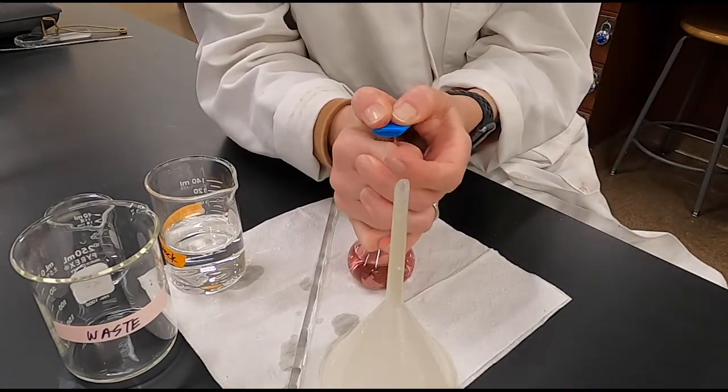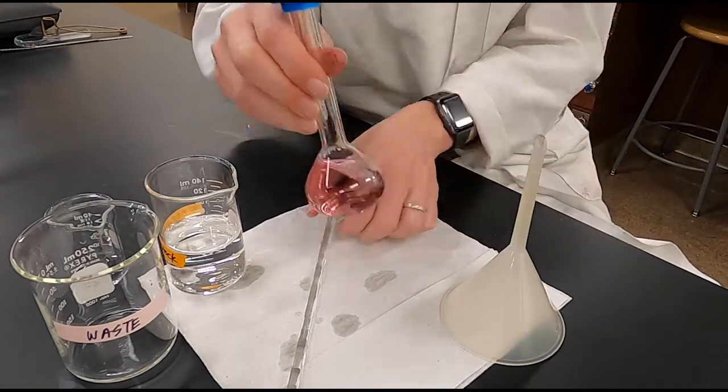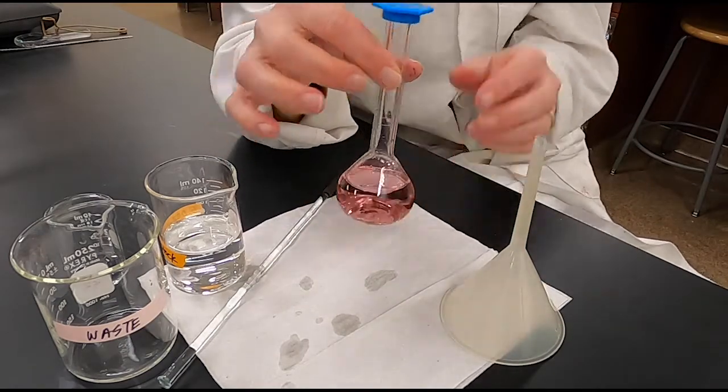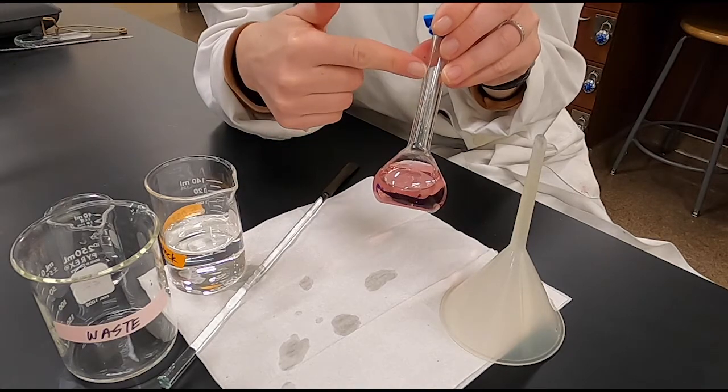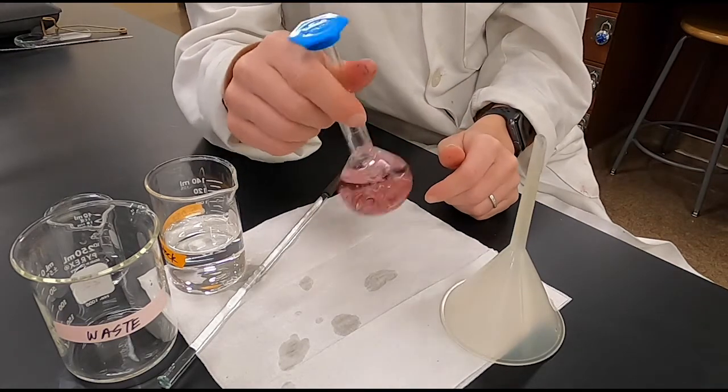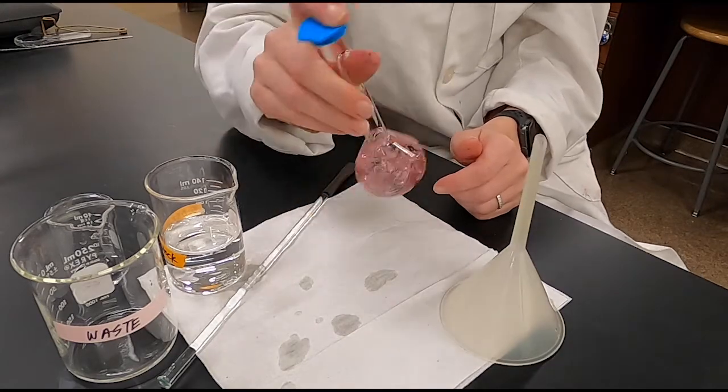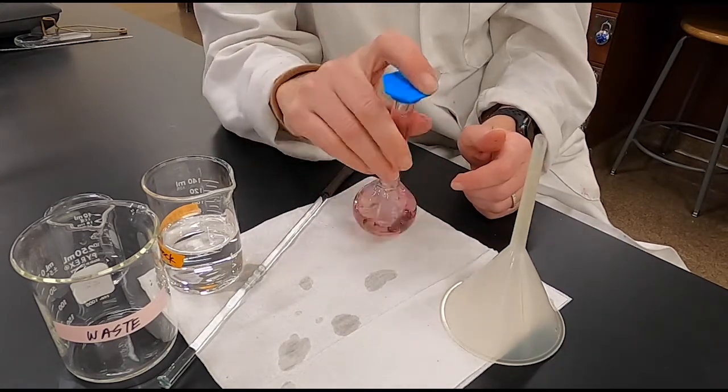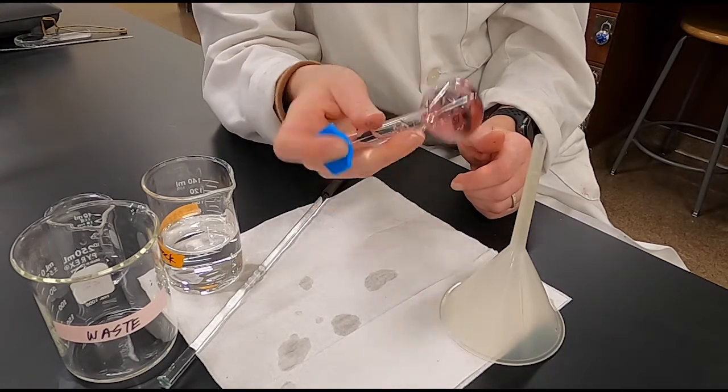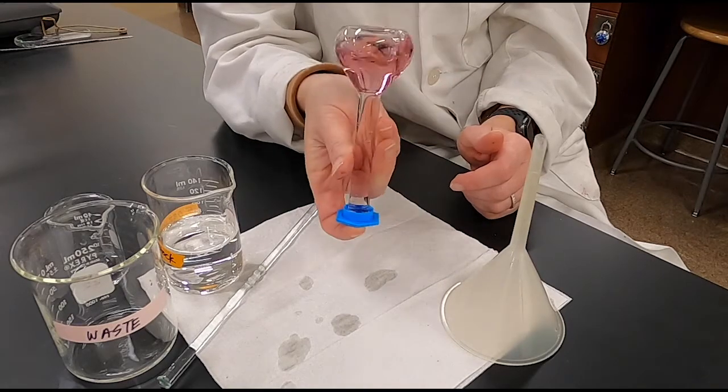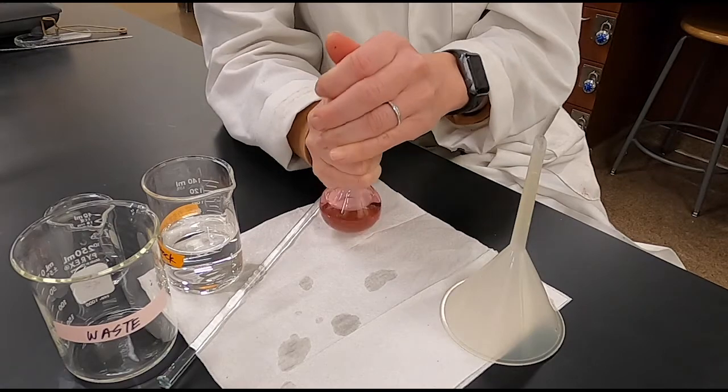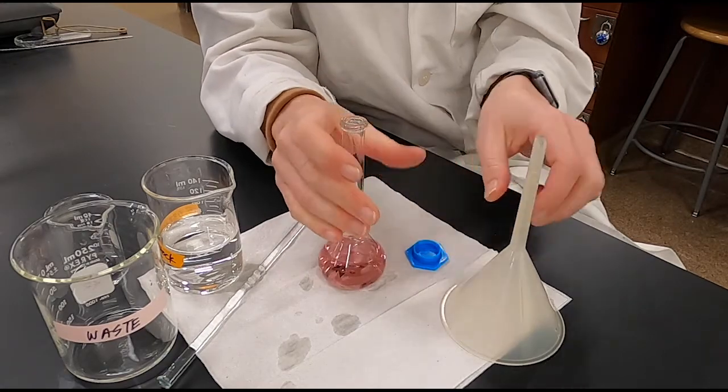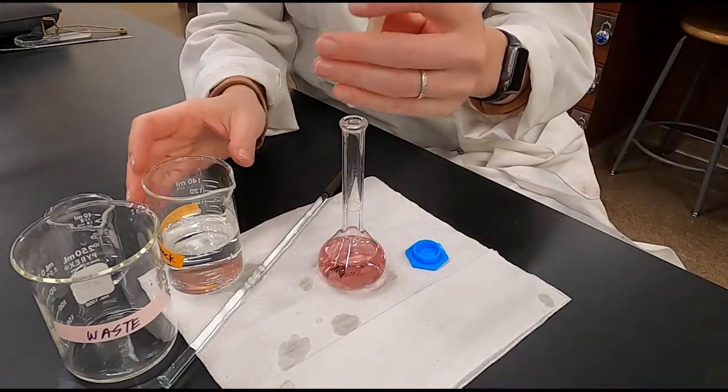Remember that when you prepare a solution, you want to mix it when it's still only partially full. The narrow neck on the volumetric flask makes it difficult to mix thoroughly if you start by filling it to that mark. So mix it thoroughly when it's halfway full, and then you can continue to prepare your solution by adding more solvent.